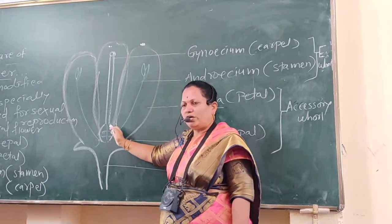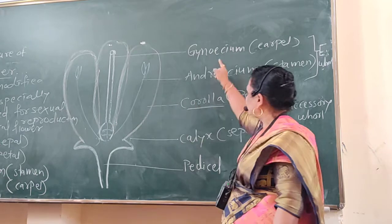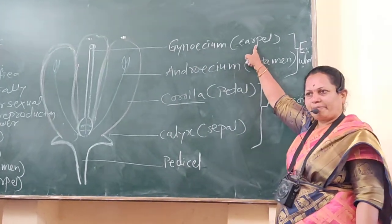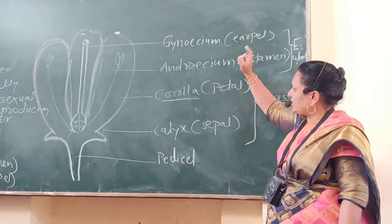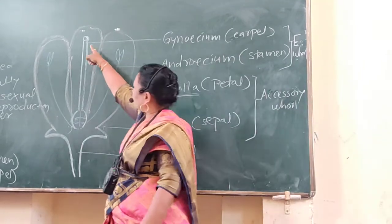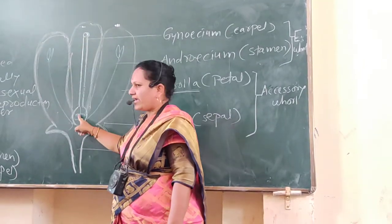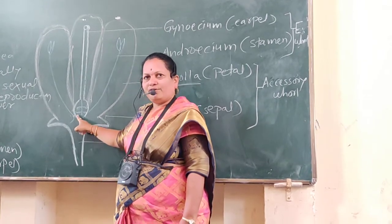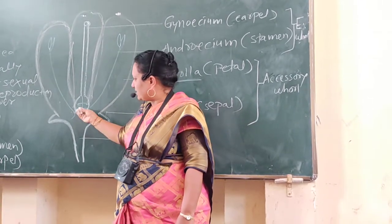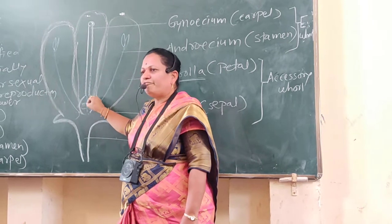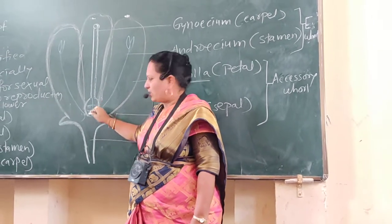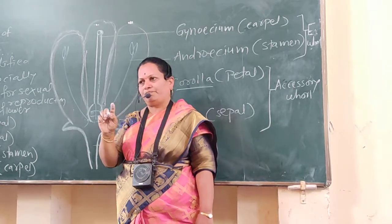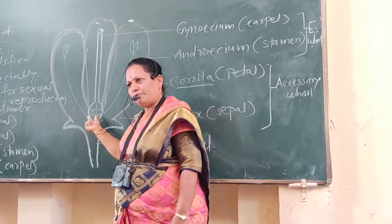The innermost whorl of a flower is called the gynoecium. The individual part of gynoecium is called a carpel. A single carpel consists of stigma, style, and ovary. Inside the ovary, ovules are present. Ovules produce seeds after pollination and fertilization, and the overall ovary is converted into fruit.